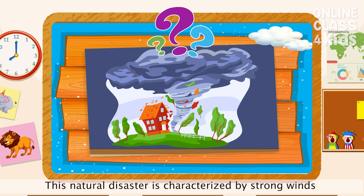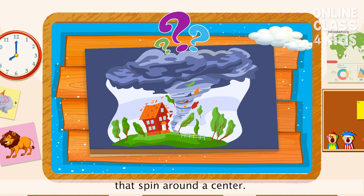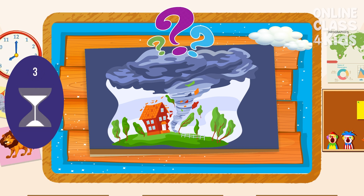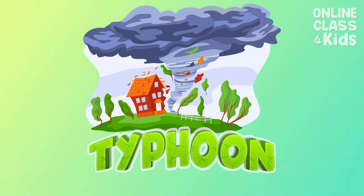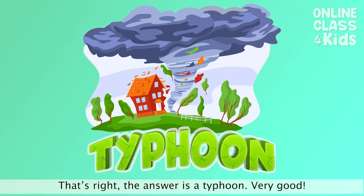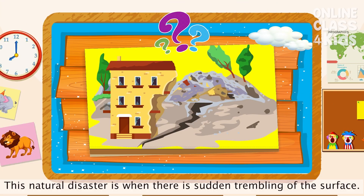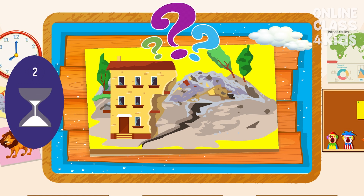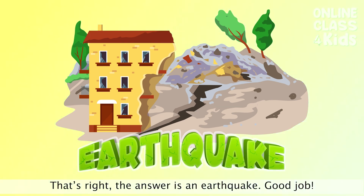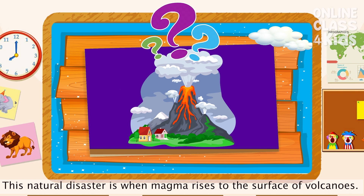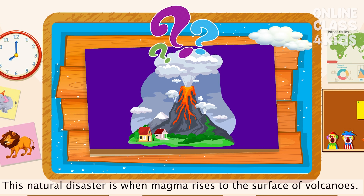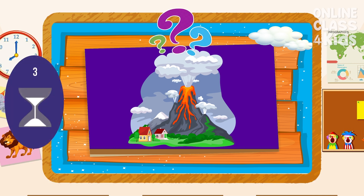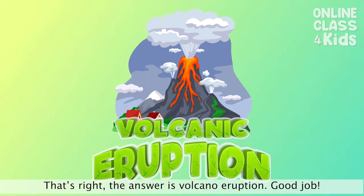This natural disaster is characterized by strong winds that spin around the center. That's right! The answer is a typhoon. Very good! This natural disaster is when there is sudden trembling of the surface. That's right! The answer is earthquake. Good job! This natural disaster is when magma rises to the surface of volcanoes. That's right! The answer is volcanic eruption. Good job!